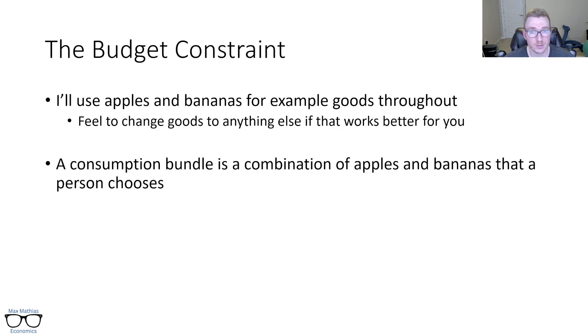I'm also going to define a consumption bundle as a combination of apples and bananas that a person chooses. So we'll denote a bundle as just something X or Y or whatever. The math notation can kind of throw people off, but it's important to remember that this X_A number is just some amount of apples, like 10, and that X_B is just some amount of bananas, like five. So if that's 10 and five, then I'm buying 10 apples and five bananas. I could also be buying three apples and two bananas. These are just stand-ins, so we don't have to keep specifying numbers every time.